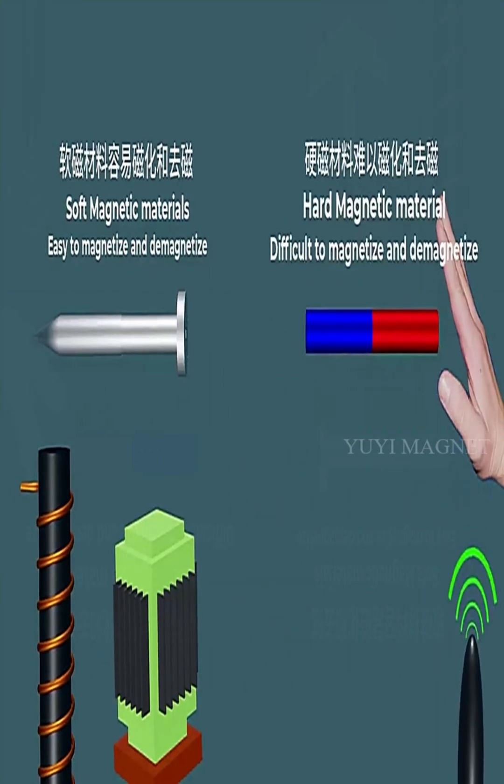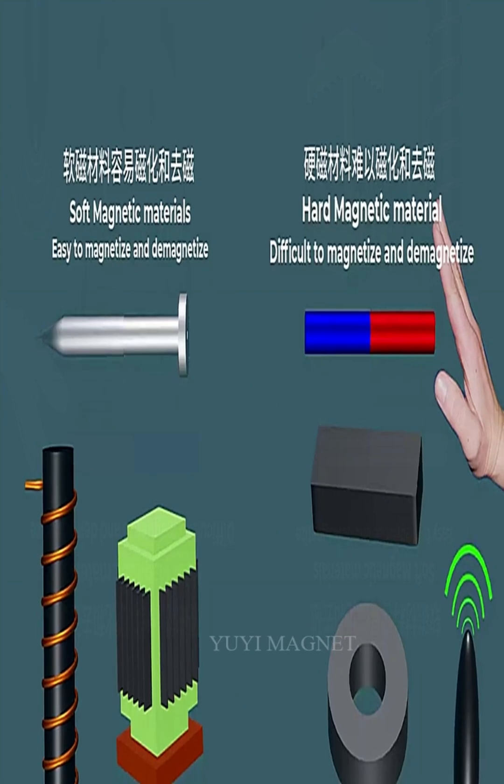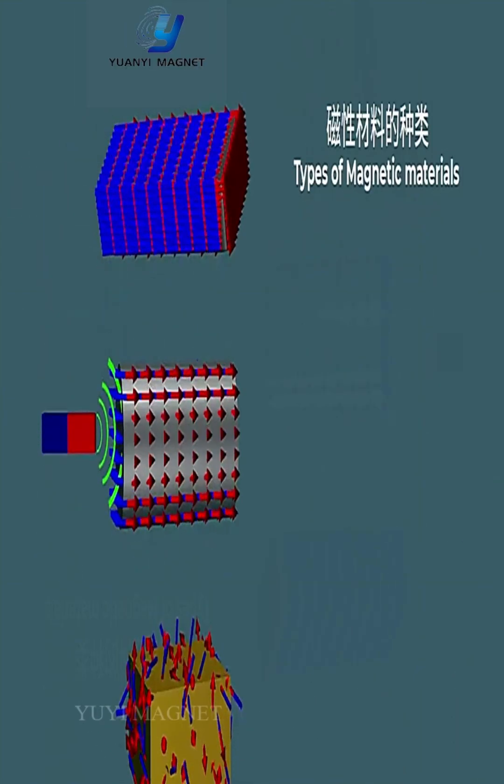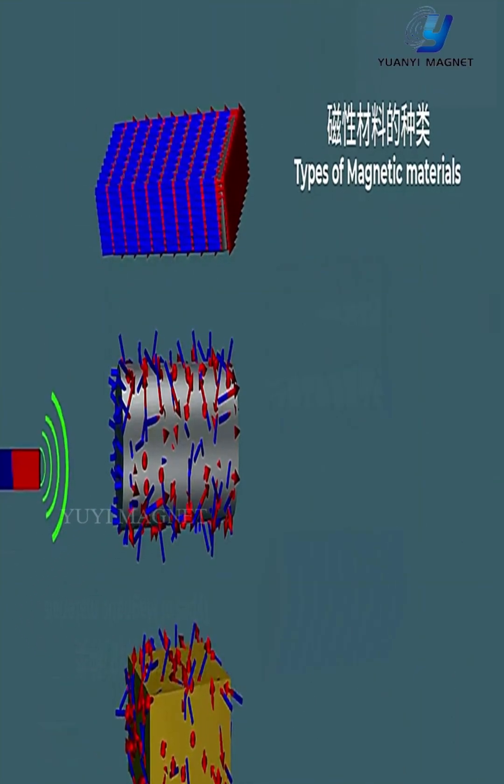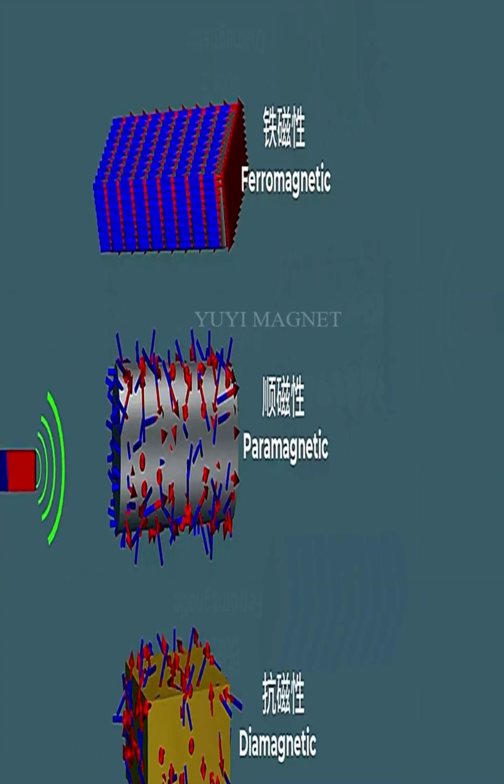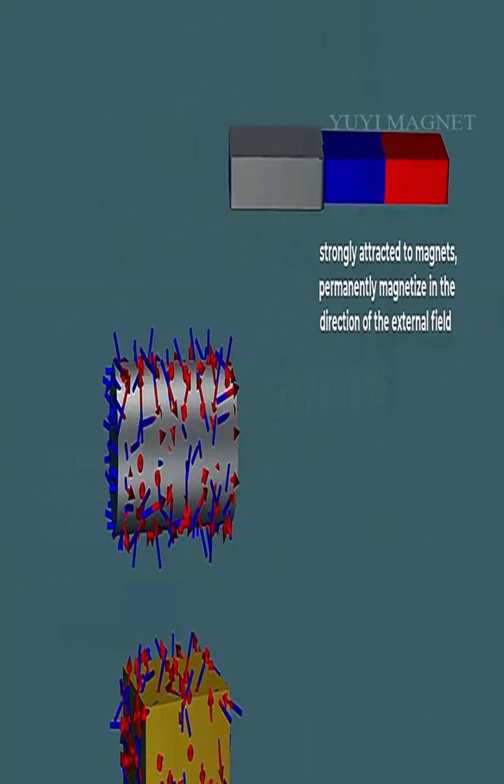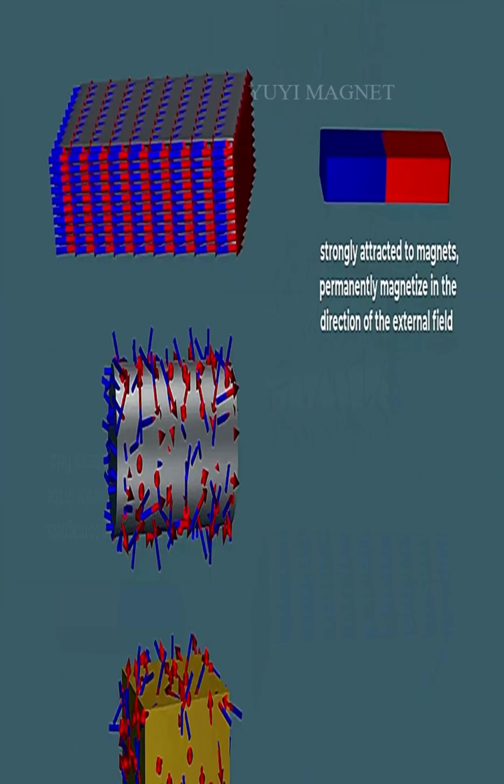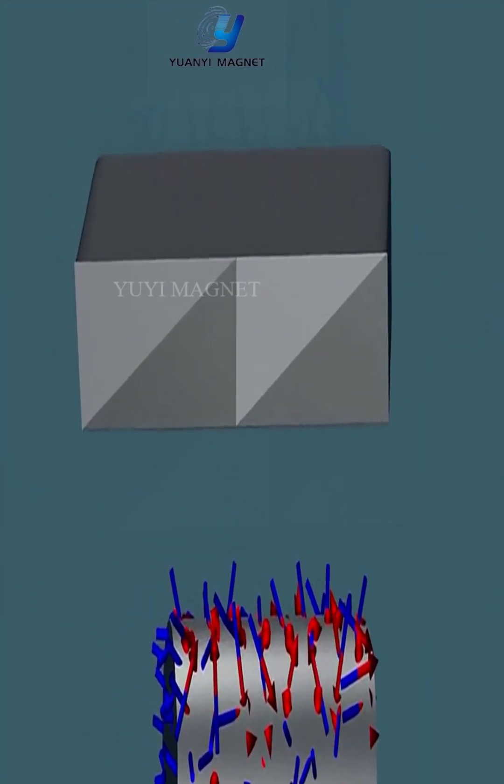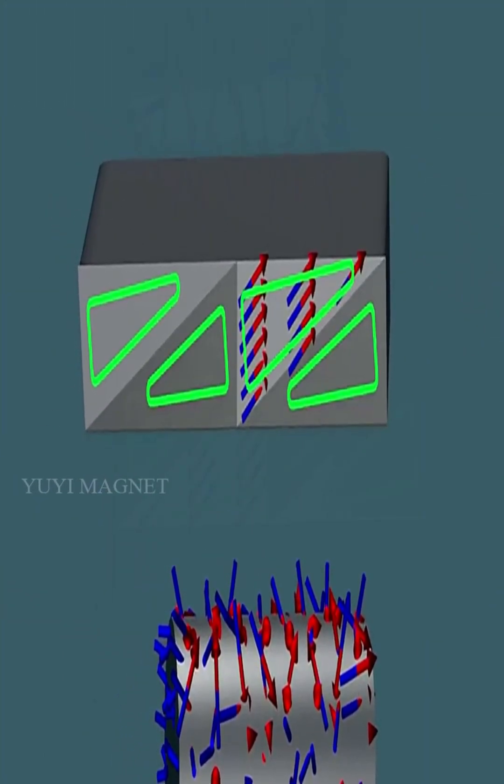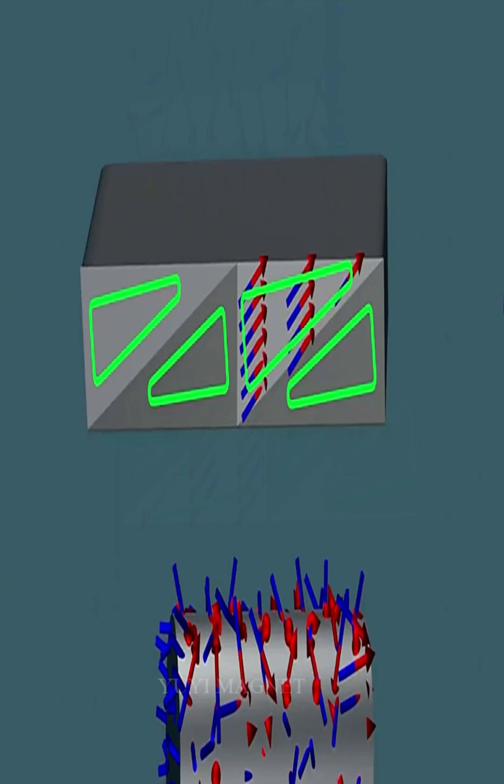All matter is composed of atoms. Each atom has electrons that carry electric charge. They spin on their own axis and orbit around the nucleus. The electrons' orbital movement around the nucleus resembles a current loop.